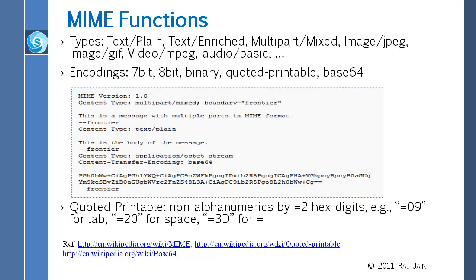For example, one content type says 'application/octet-stream,' which means it is binary code — an executable type of thing. It doesn't say executable, it says binary code. You can see it is encoded in some letters — lowercase, uppercase, numbers, and so on. They don't use Base64 here; they use something called quoted printable. That's another encoding. If you want to know more about it, you can go to Wikipedia — it explains quoted printable.